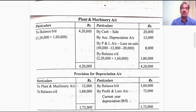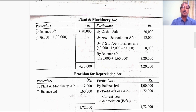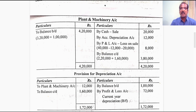Now let us move to the plant and machinery account, which is prepared at cost value. The opening balance is written on the debit side — the book value plus the opening balance of provision for depreciation are added, giving a total of 4,20,000 rupees as the opening cost value. The closing balance is written on the credit side using the same procedure: the closing book value plus the closing provision for depreciation gives 3,80,000 rupees as the closing cost value of plant and machinery.